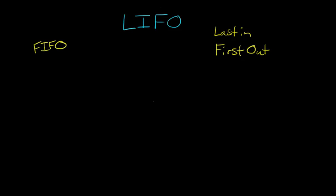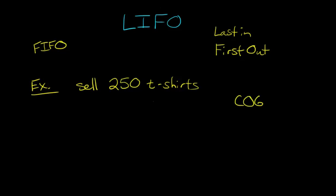If you just watched our FIFO video, this will be very easy to understand. But let's use an example here. You have a firm that sells t-shirts. Let's say you sell 250 t-shirts at your company, and they're all the same type of t-shirt. So when you sell these t-shirts, you have to determine what's my cost of goods sold?